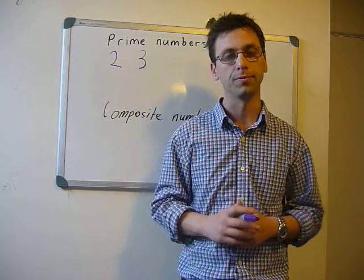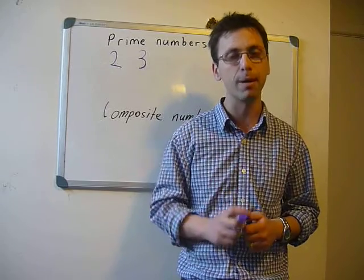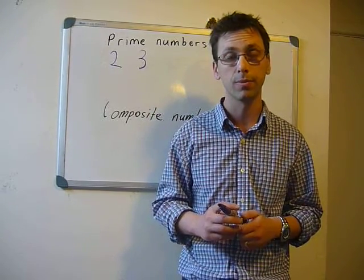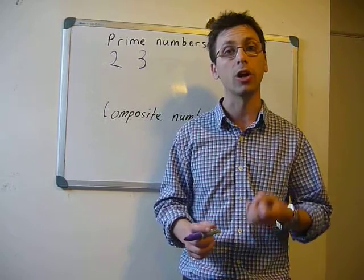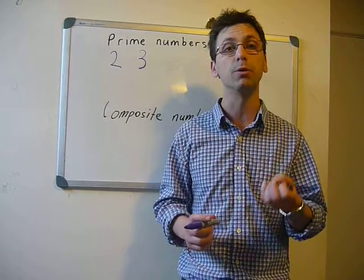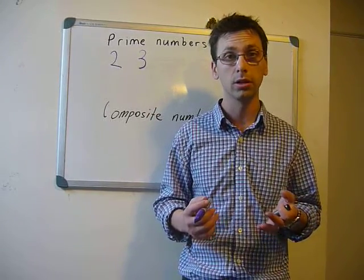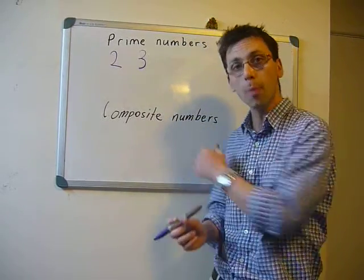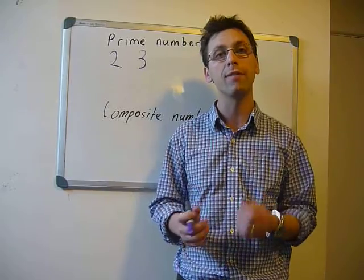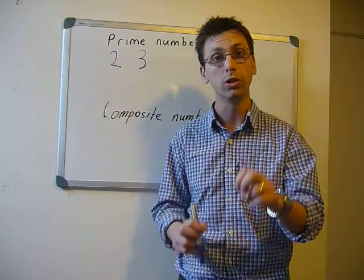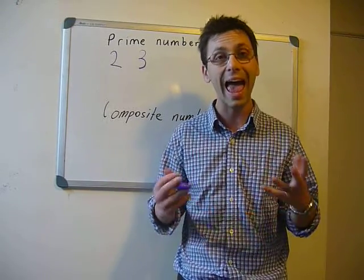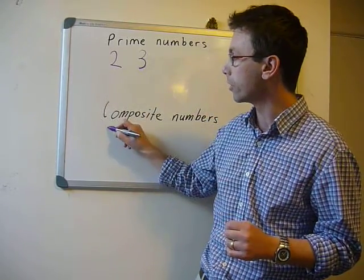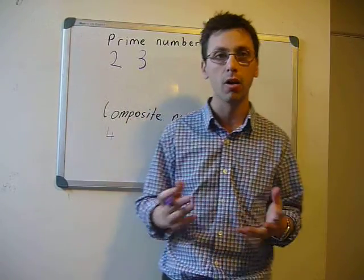Four. Now, if you remember what the definition of a prime number was — it is a number that can only be divisible by itself and one — the number four would be a composite number because you have two times two and four times one. So the composite number will be four.